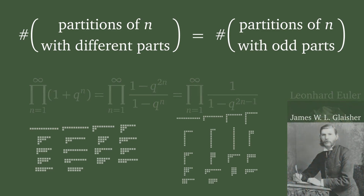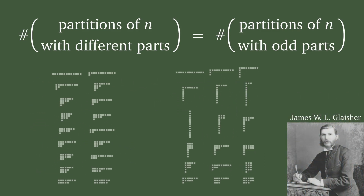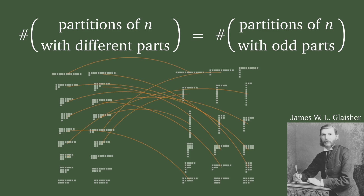There is a more visual approach by James W. L. Glaisher from 1883. He constructs a one-to-one correspondence between these two partition families, which then entails that there must be equally many members in each. Starting with a partition with only odd parts, say 5 plus 5 plus 1 plus 1 plus 1, we count how often every part occurs.